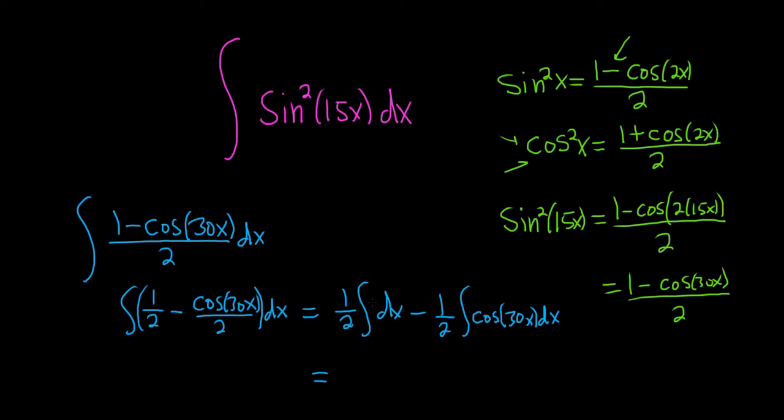When you integrate 1, you just get x. So this is 1 half x minus 1 half. And we're integrating cosine. So when you integrate cosine, you have to think backwards. What's a function whose derivative is cosine? Well, the derivative of sine is cosine. This will be sine of 30x.